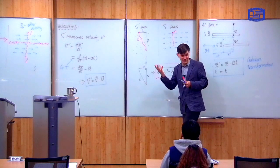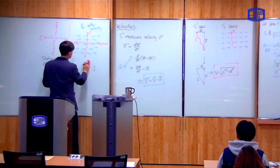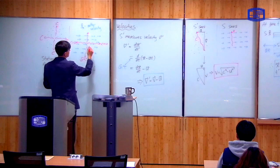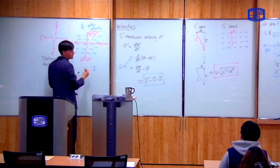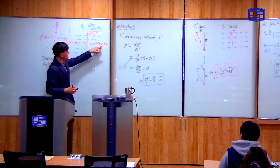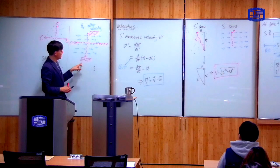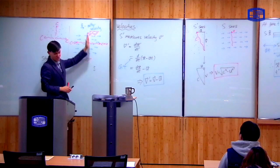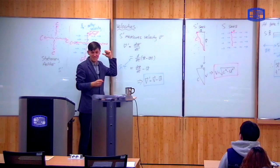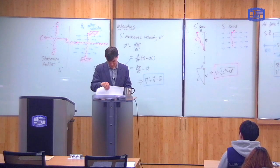So that answers the question: what speed of light do you measure when the ether is moving? You measure a speed of square root of c squared minus U squared. So this observer with the moving ether will measure speed c plus U parallel to the ether, c minus U anti-parallel to the ether, and square root of c squared minus U squared at 90 degrees to the ether. This result is going to be important for the experiments I want to describe next.